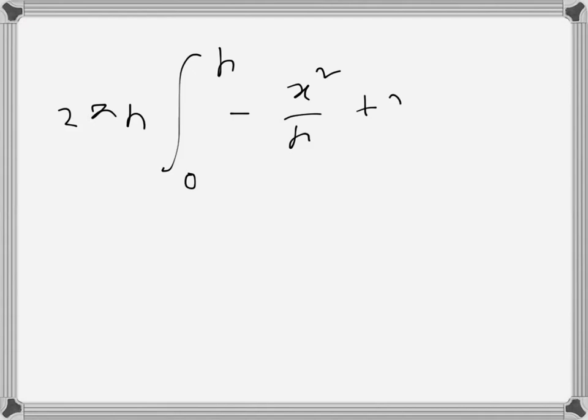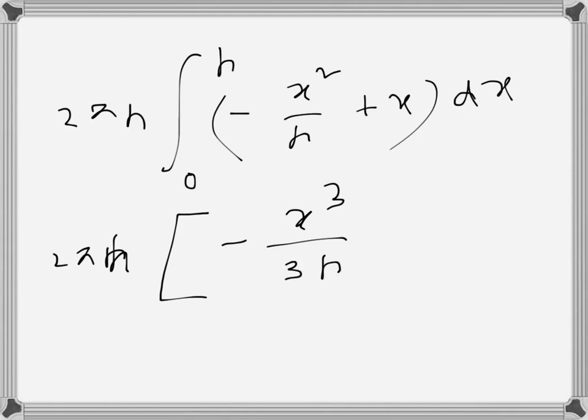So 2πh. After integration, it becomes minus x cubed over 3r plus x squared over 2, evaluated from 0 to r. So 2πh times...